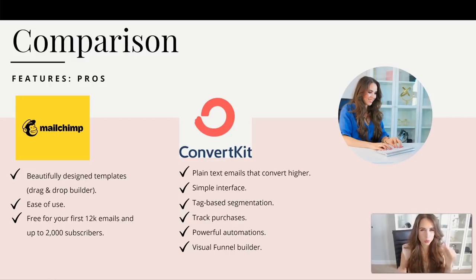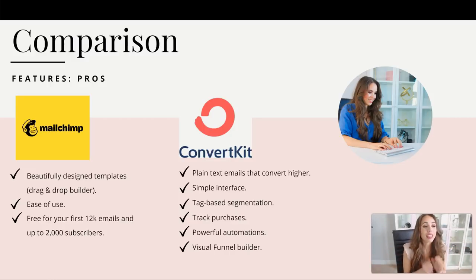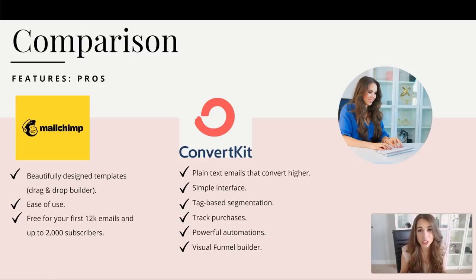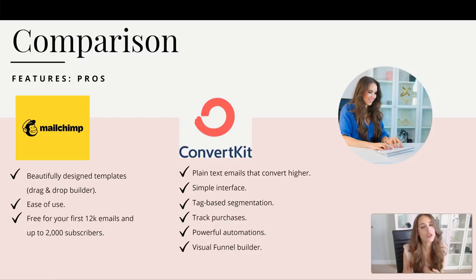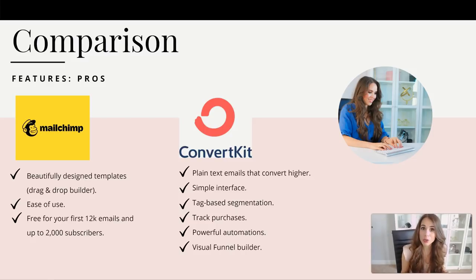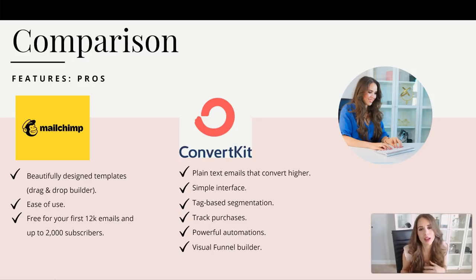Now let's get into the real meaty comparison: MailChimp versus ConvertKit. Here are the pros of MailChimp. I love that they have beautifully designed templates and a drag-and-drop builder that makes it accessible and usable to a wide variety of audiences. However, I do think significantly that plain text emails always win. It's also super easy to use — that's a beautiful thing from MailChimp. They have a really simple interface and I love them as a company; they're such a strong, cool team.